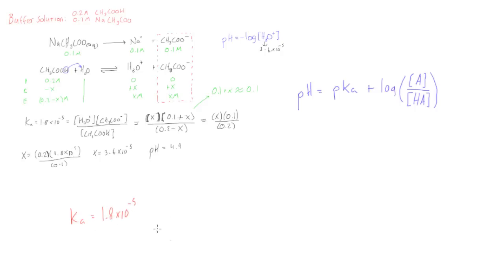So we can just take the negative log of this, which is going to equal pKa. And if we go and do that in our calculator, that is going to be 4.74. Let's round it off to that.